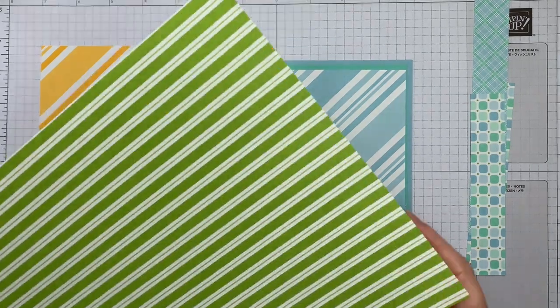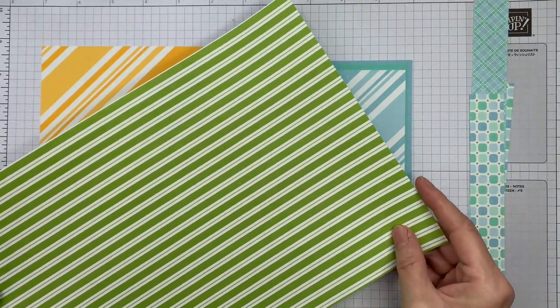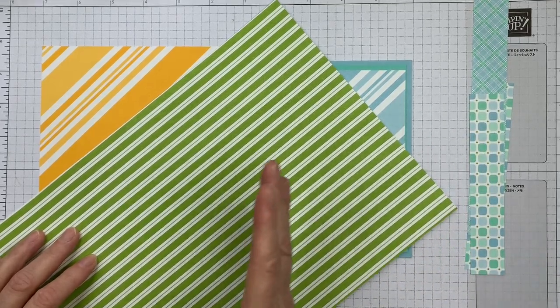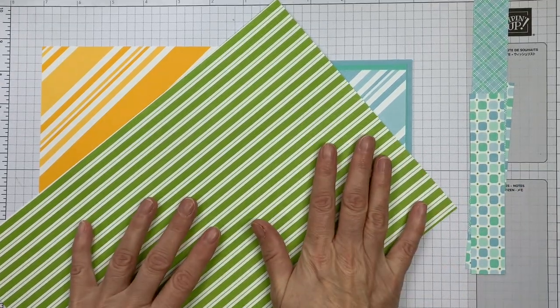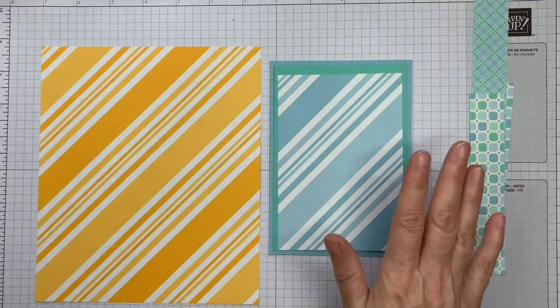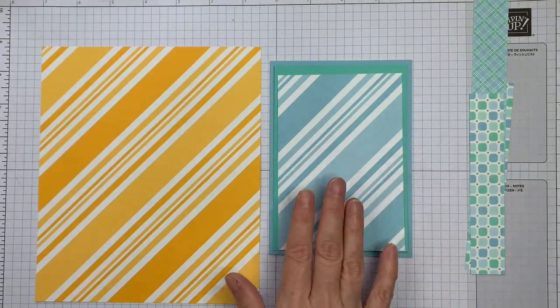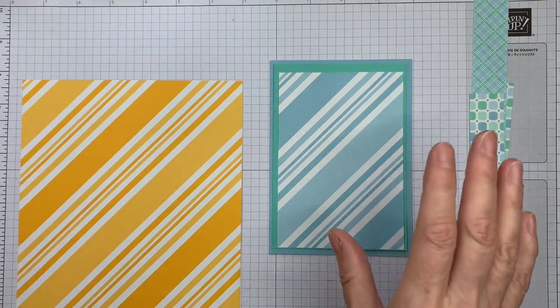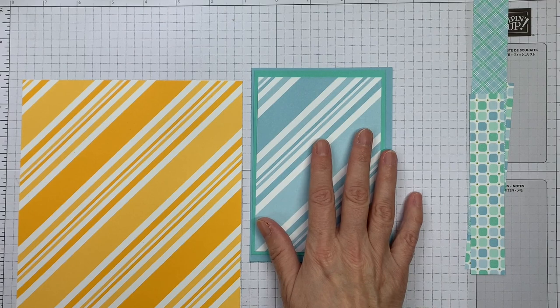You can always cut a plain stripe into a diagonal but you're then obviously going to lose some of your paper. With this pack of papers you can afford to do that really. But like I said, I'm going to work with these diagonal ones today and give you just a few ideas for how you can dress up these papers.